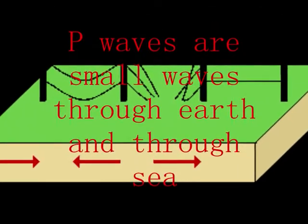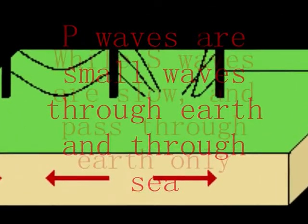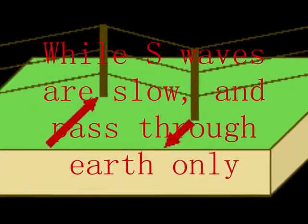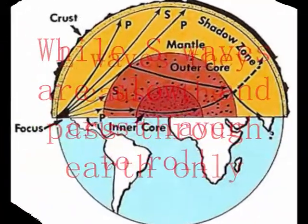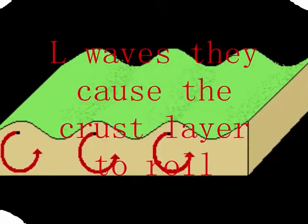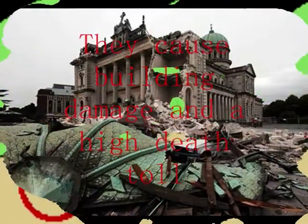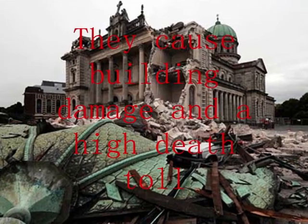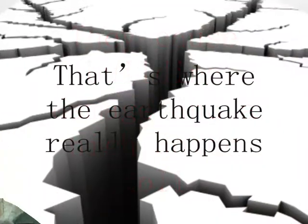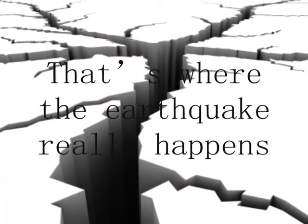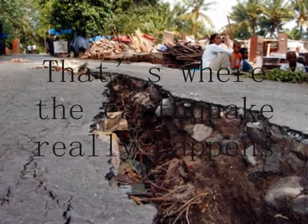P-waves are fast and pass through Earth and sea. S-waves are slow and pass through Earth only. L-waves cause the surface to roll. They cause building damage and a high death toll. That's where earthquakes really happen.